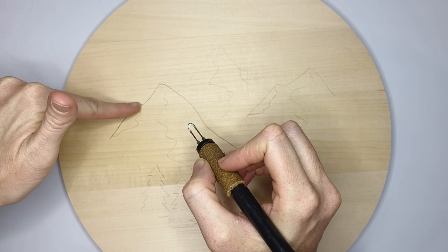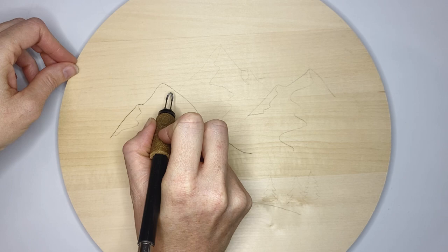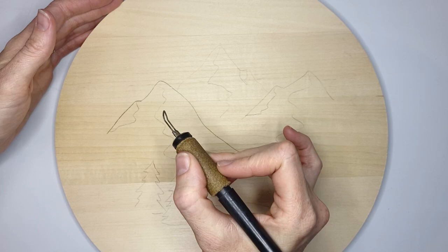So the sharp edge is going to go on this side of the mountain and then we're going to twist it and do it on that edge of the mountain. Okay, and you can turn your wood. It's a whole lot easier than turning your pen and fighting the cord.